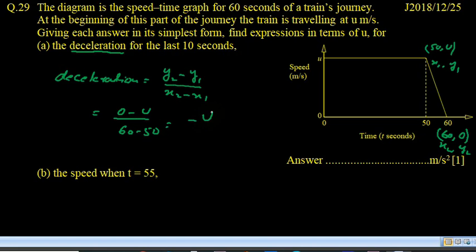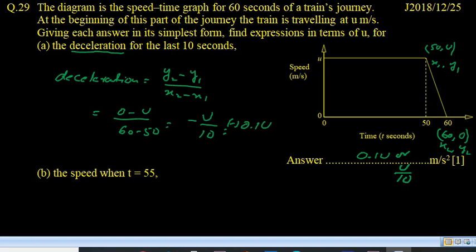So it becomes minus u over 10 or 0.1u. And since it is deceleration so we don't write minus or minus in bracket. So we may write 0.1u is the deceleration or u upon 10 meter per second square.